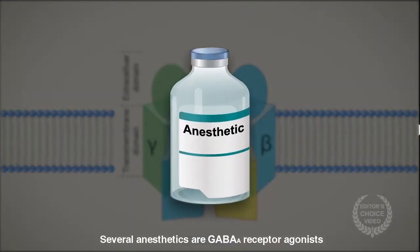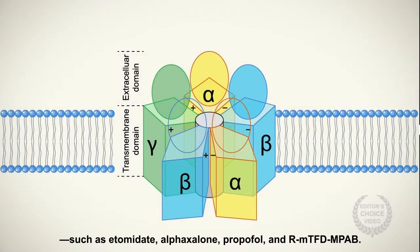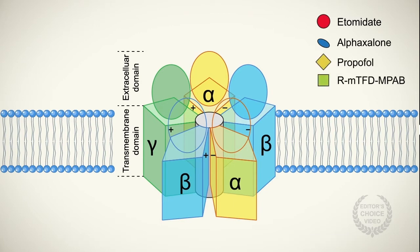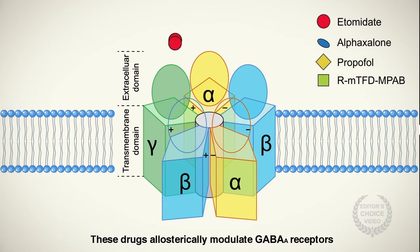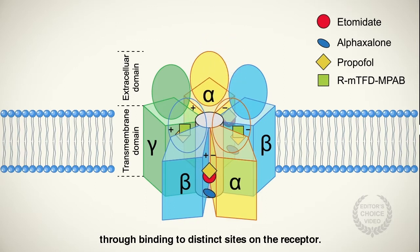Several anesthetics are GABA-A receptor agonists, such as etomidate, alfaxilone, propofol, and RMTFD-MPAB. These drugs allosterically modulate GABA-A receptors through binding to distinct sites on the receptor.